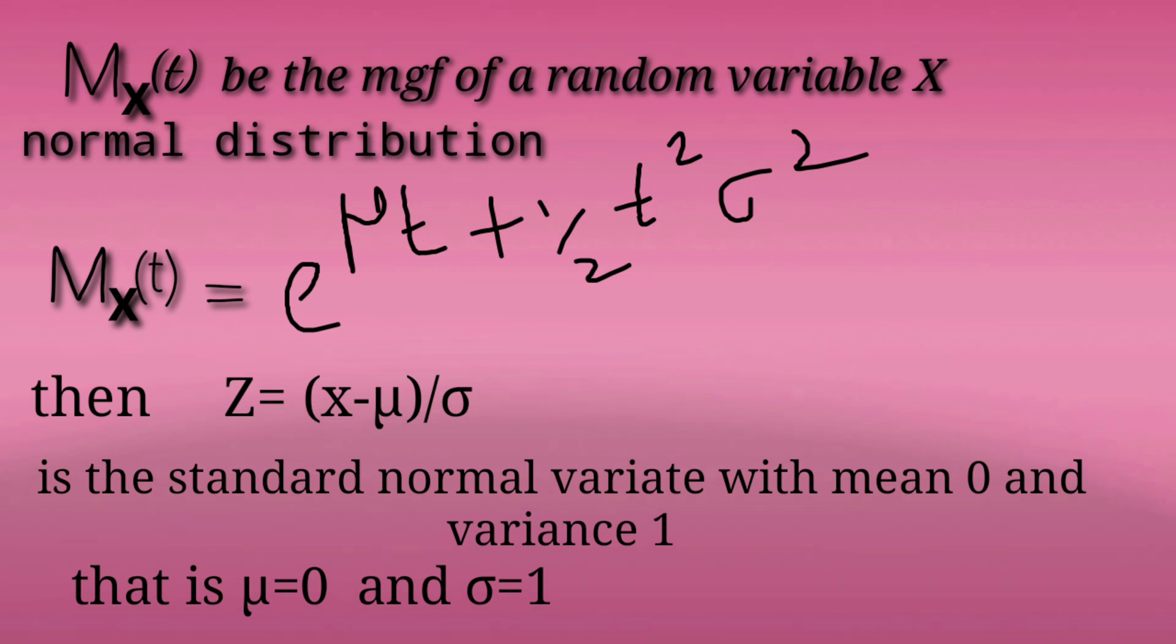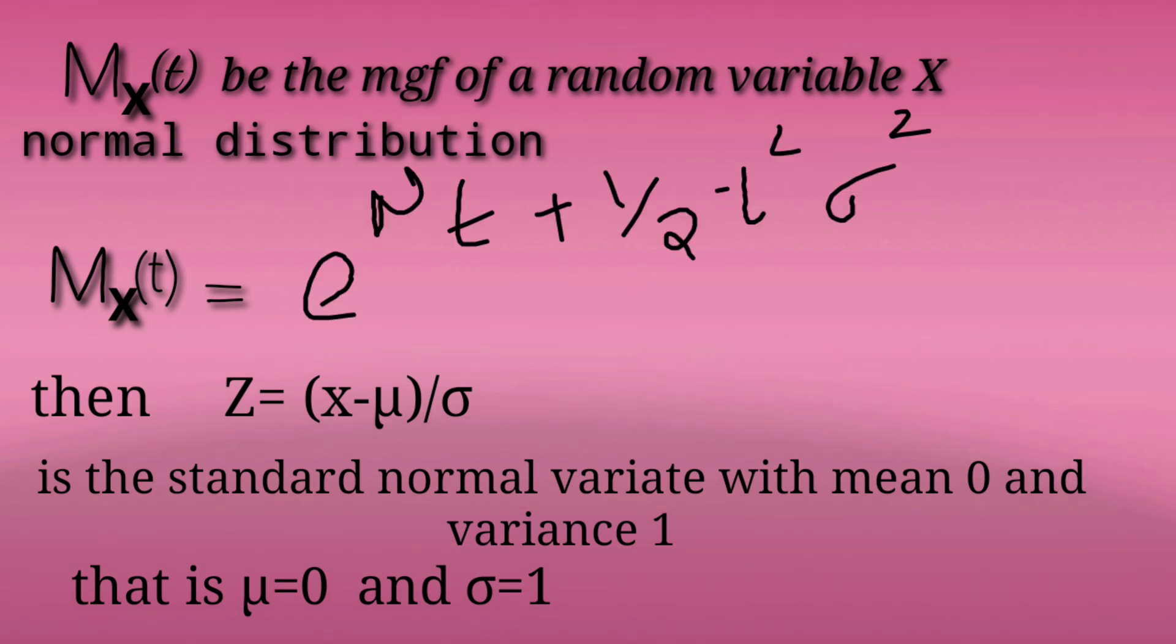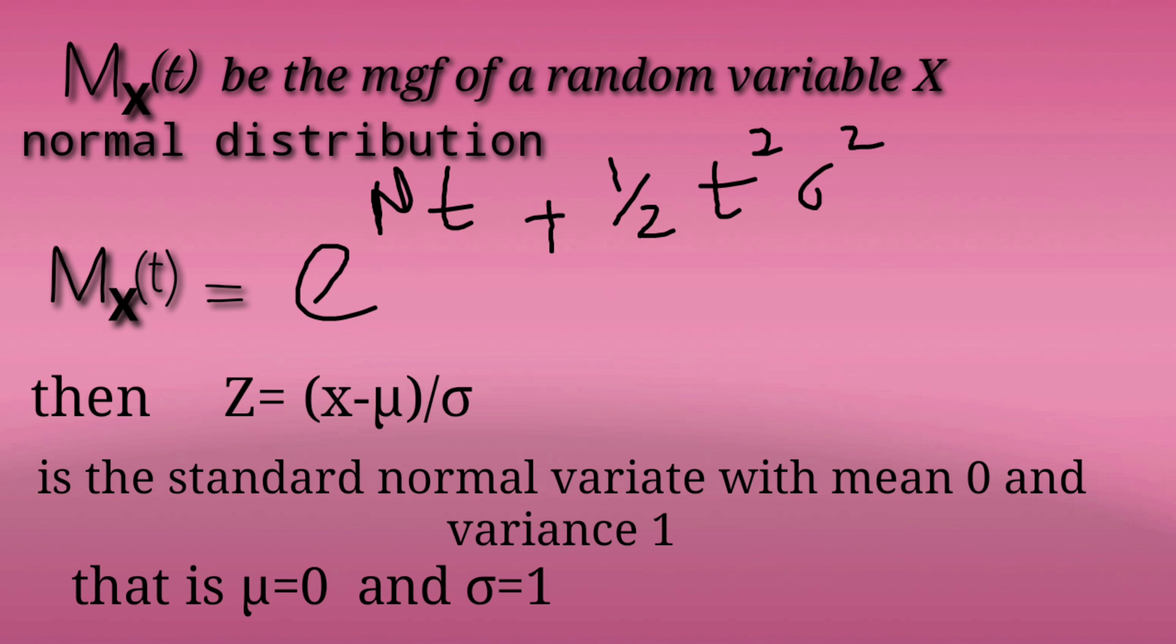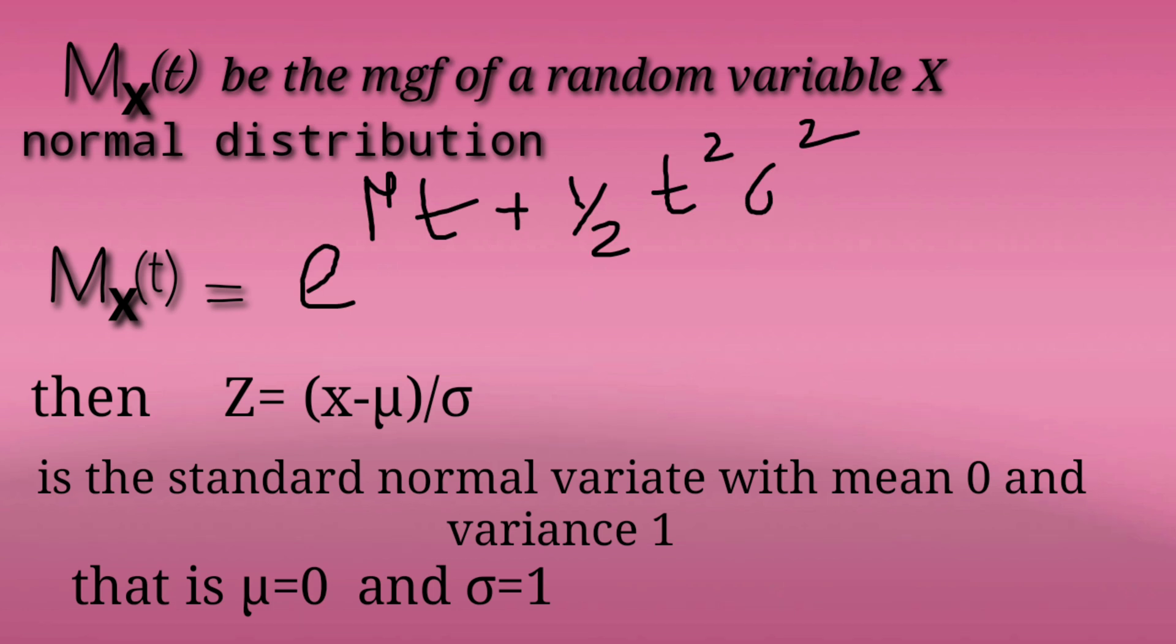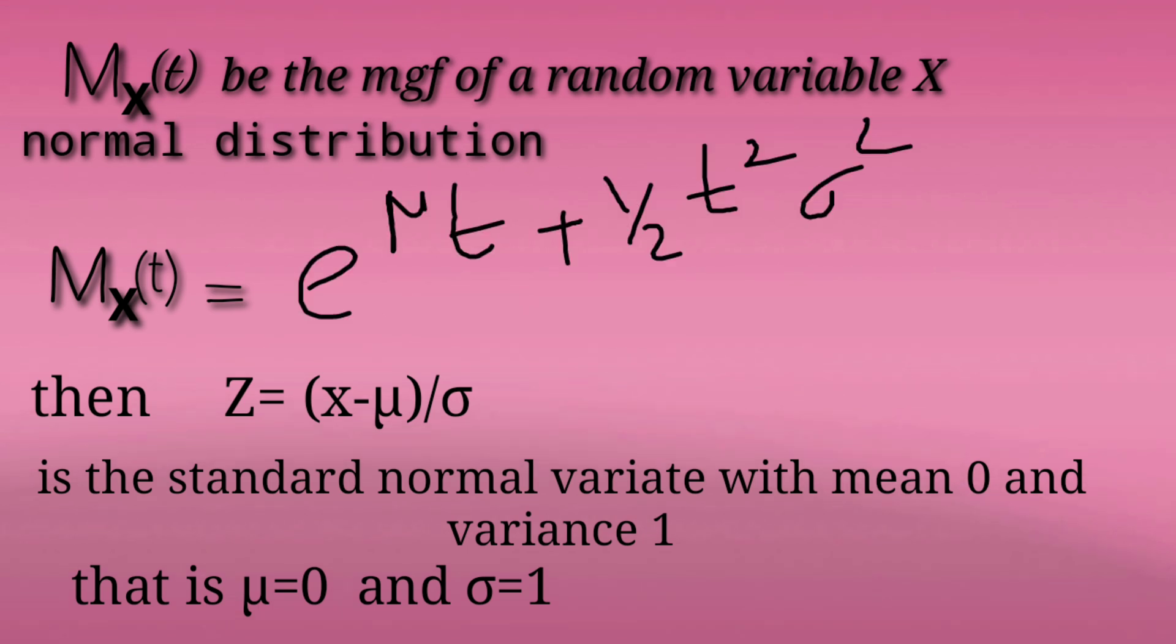If X is standardized, we get a standard normal random variable. That is, Z equals x minus mu by sigma, where Z has mean 0 and variance 1. Then, Mx of t equals e raised to t square by 2.